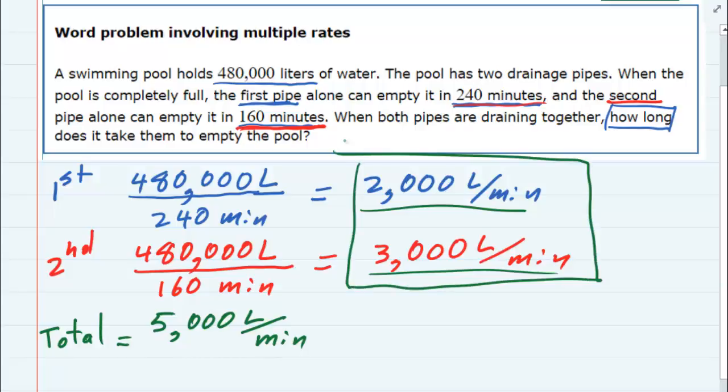So now that we know the rate, 5,000 liters per minute, to figure out how long it would take them working together, I take the total pool, 480,000 liters, and I divide by the rate. The rate that it is draining is 5,000 liters per minute. And if we do that division, we come up with 96 minutes.